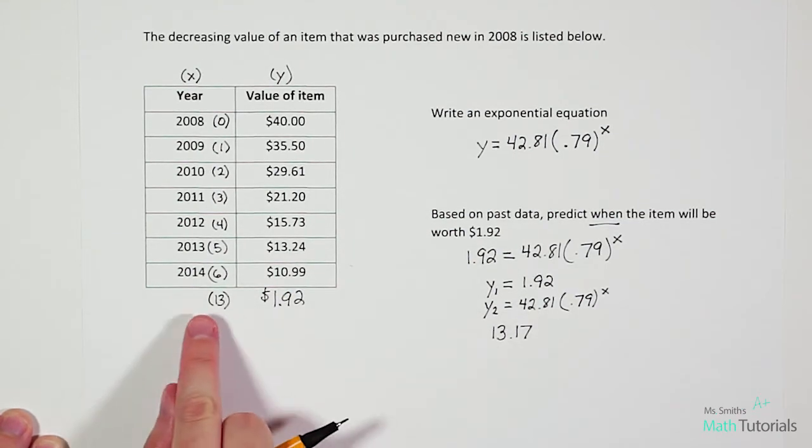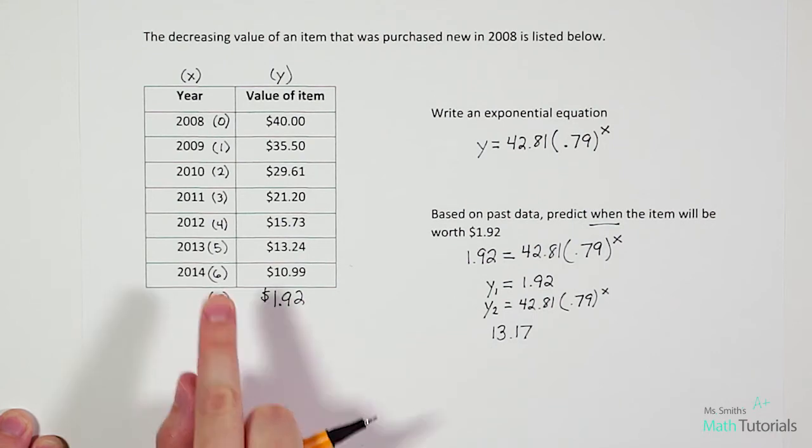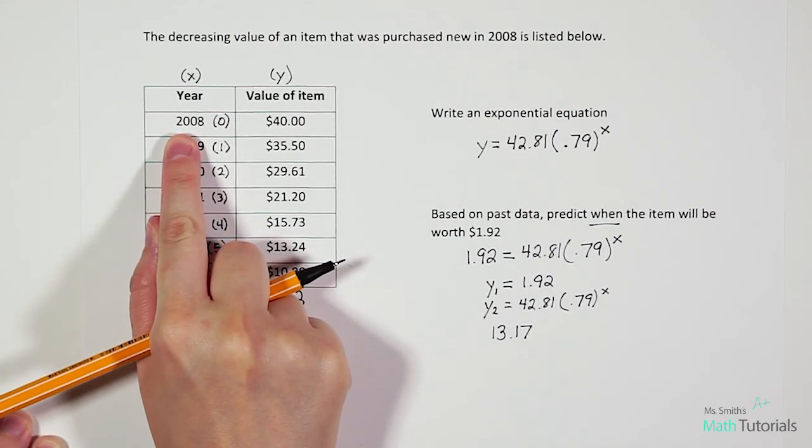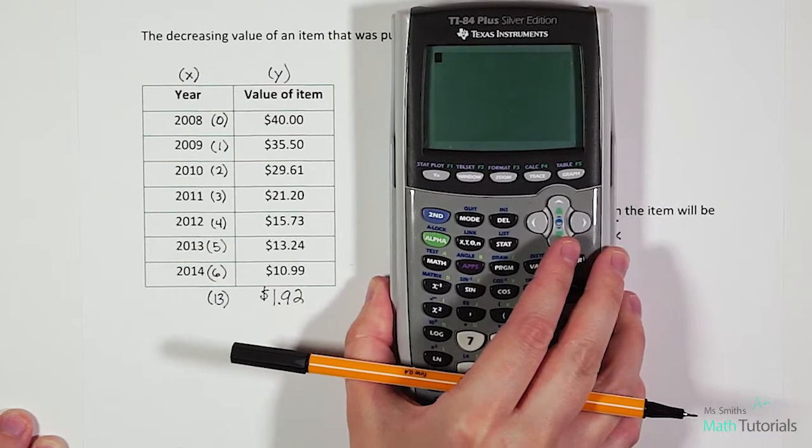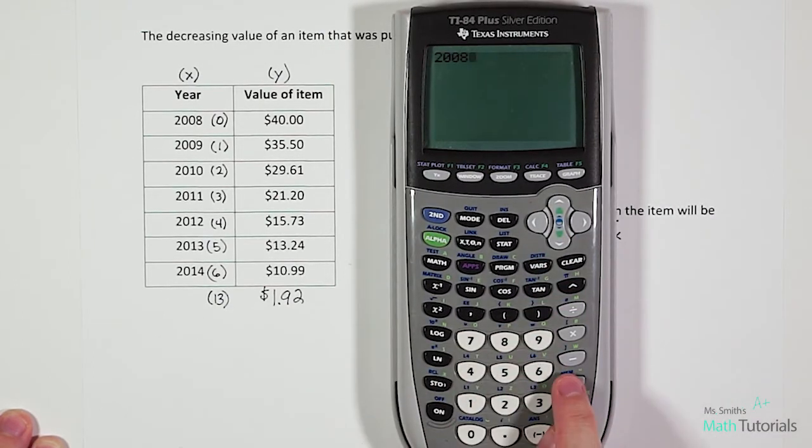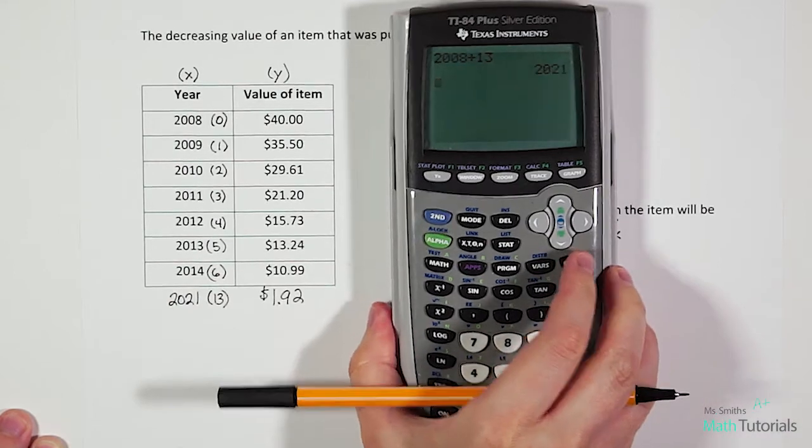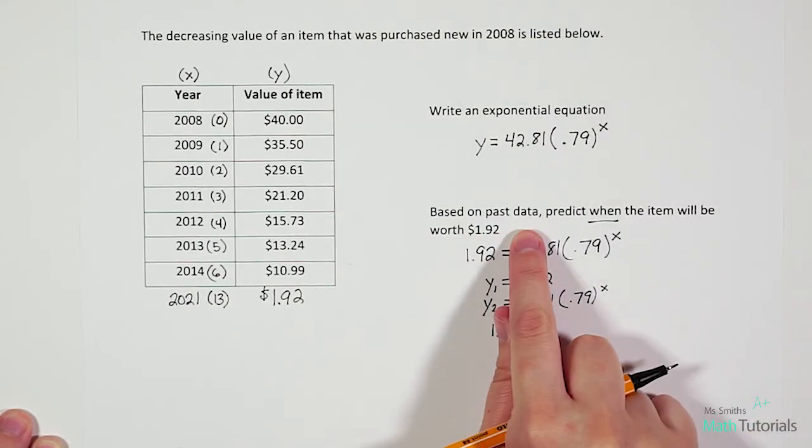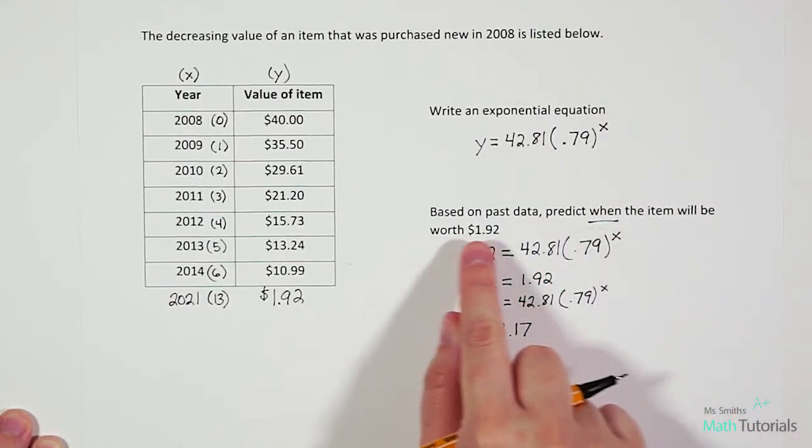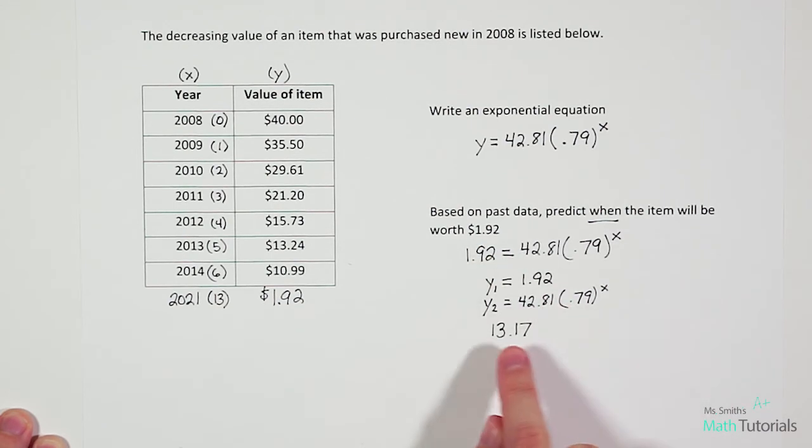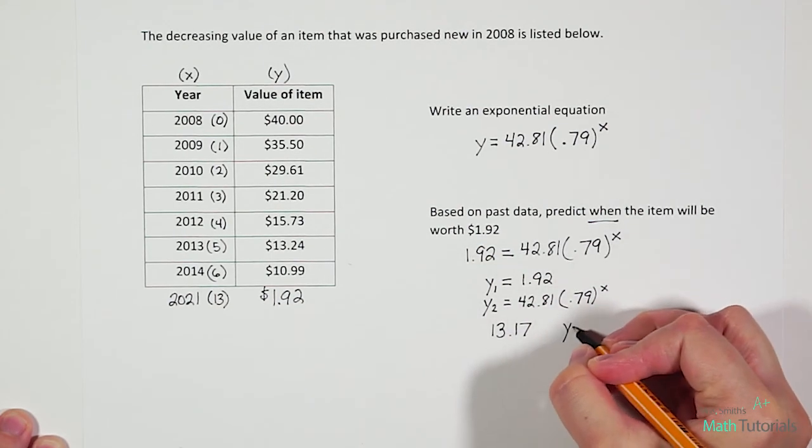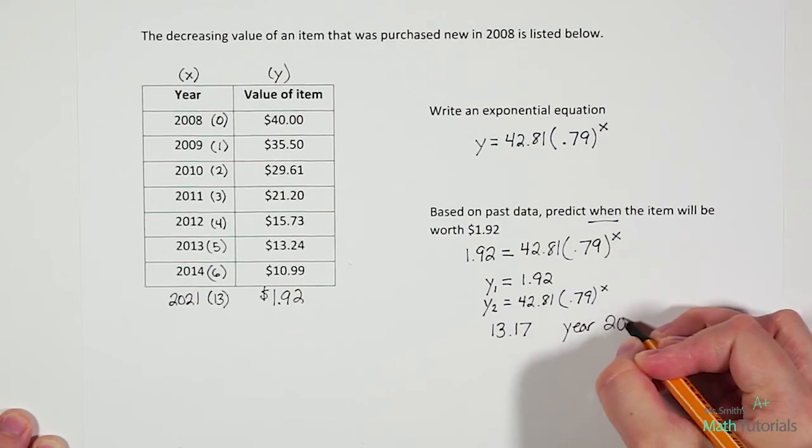So we have to think, what year would year 13 be? Remember 2008 was year zero. So all we have to do is say 2008 plus 13 years, and that will leave us at 2021. When they asked us, based on past data, predict when the item will be worth $1.92, it will be worth that in year 2021.